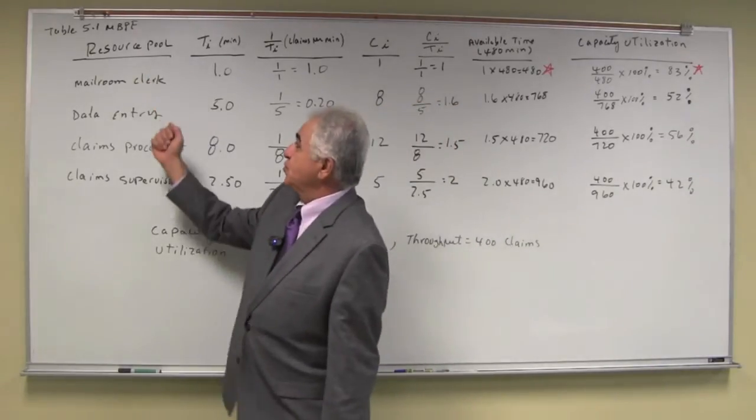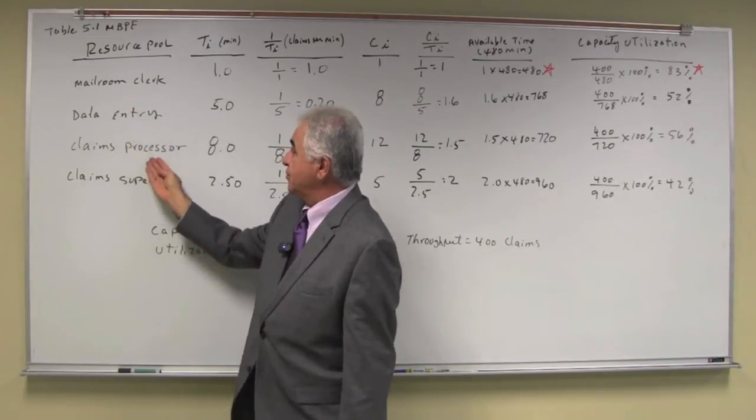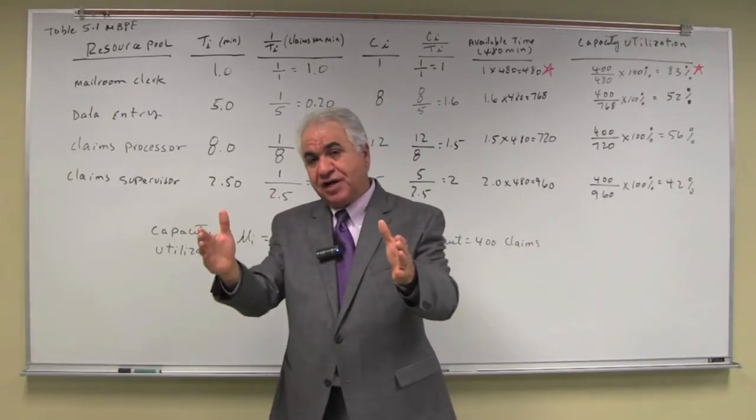What we have, we have resource pool, mayor and clerk, data entry, claims processing and claims supervisor. So these are the steps in the process.